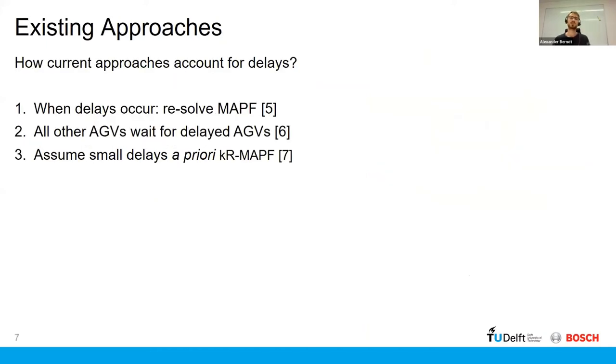Now, if we have to go to the literature to see how this challenge, this problem is approached, one option, the naive option I would say, is to resolve the MAPF at each time that an AGV gets delayed. Another one would be to wait for AGVs, the delayed AGVs, and then when they're all on schedule again relative to each other, they can continue with their task.